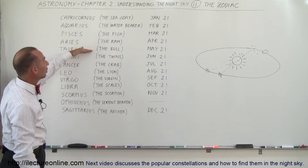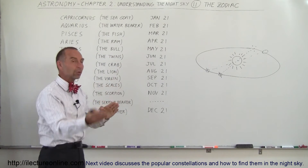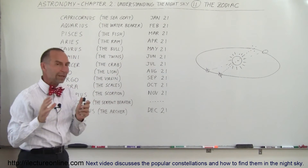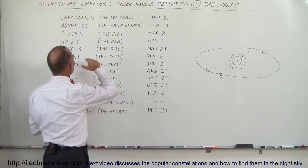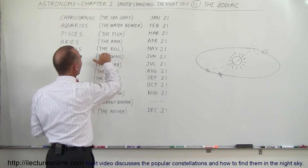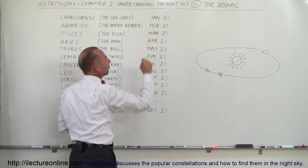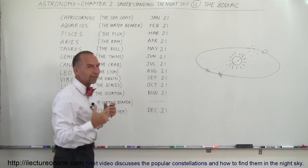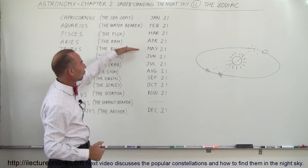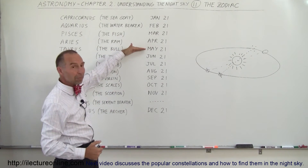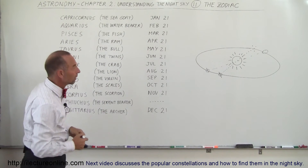Taurus — the bull — notice that May 21st is when Taurus will be right behind the Sun. In astrology, the time period when you are a Taurus starts on April 21st and ends May 21st. That's the month of the Taurus, so even though the date is associated with the end of the period, it's the month prior to that, roughly speaking.